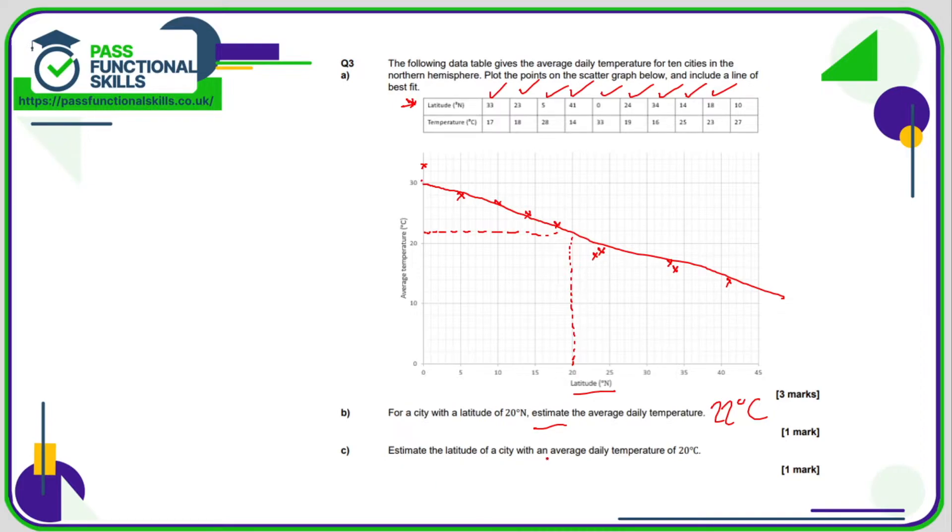Now we want to estimate the latitude of a city with an average daily temperature of 20. We're going to do a similar thing except this time we're going up the side to 20 degrees, go across to the line and take a reading. So there's 20, 21, 22, 23, so that will be 23 degrees north. Again the mark scheme might say 24. You would have hopefully drawn a better line of best fit due to using a pencil and ruler but the mark schemes usually allow for a slight bit of fluctuation.